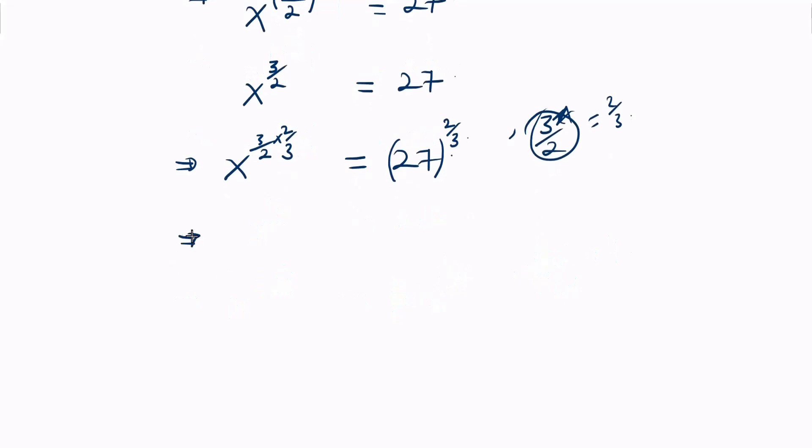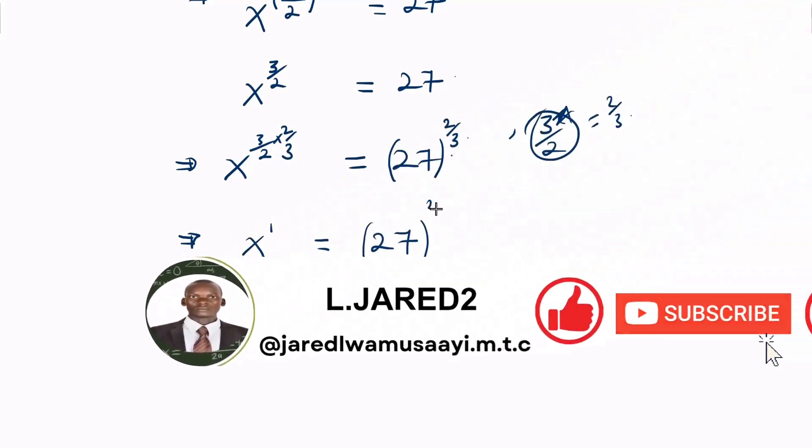This implies that on the left-hand side we have x raised to power 1, because this cancels, equaling 27 raised to the power of 2 over 3.